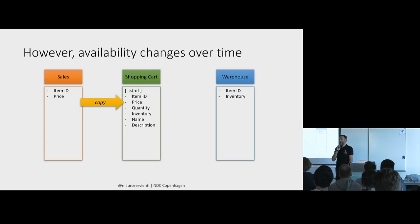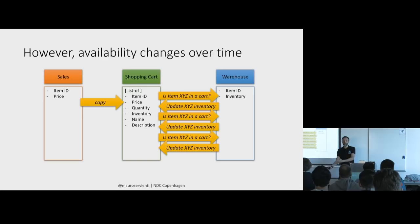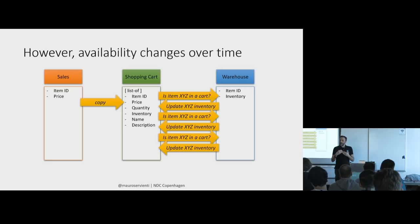However, we have an interesting problem now. Availability changes over time much more than pricing — that's the first smell. So whenever the inventory count changes, warehouse now needs to query shopping carts: do you have an item identified by item ID ABC in one of your shopping carts? If yes, can you please change the quantity for all of them, because it just changed. It might be done in an eventually consistent way using a message, or using an HTTP request. No matter the transport — you have a dependency between two things that should not depend upon each other.